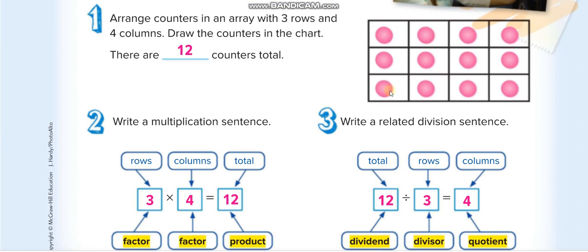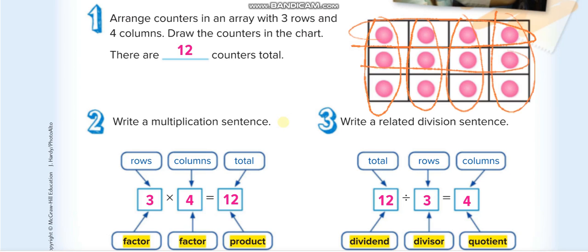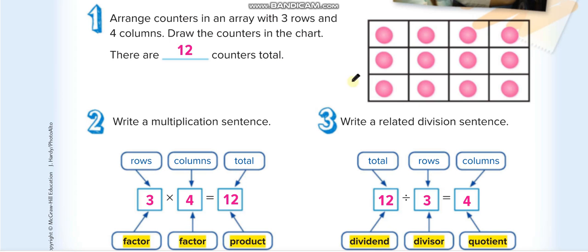Look at this array. How many columns do we have? One, two, three, four — we have four columns. And how many rows? One, two, three — three rows. When we see items arranged in vertical lines, those are columns, and horizontal lines are rows. So we have four columns and three rows.